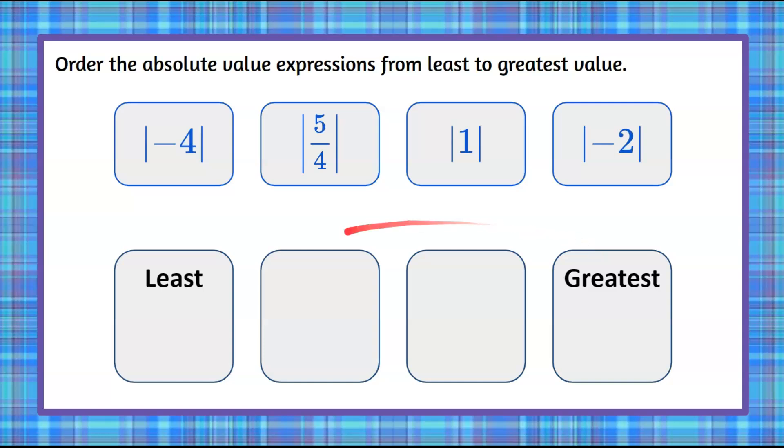Before we begin ordering, I want to make sure that everyone understands absolute value. When we're finding the absolute value of something, by definition, it is the distance a number is from zero on a number line. When we talk about distance, especially on a number line, we're talking about a positive number of units away from zero.